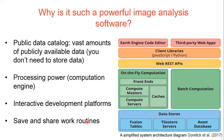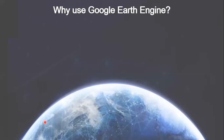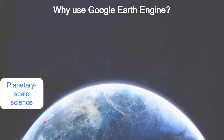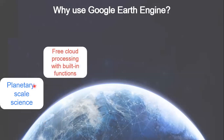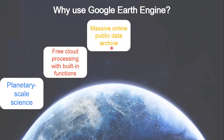With Google Earth Engine, you can simply share your work with a single click. Why should we use Google Earth Engine when we already have traditional ArcGIS, QGIS, or other software? First, it is planetary scale science — it focuses on the whole planet, not just one area. Second, it is freely available with cloud processing and built-in functions. Third, it is a massive online public data archive — most datasets from US Space Agency, European Space Agency, JAXA, and other space agencies that are publicly available on USGS are freely available on the Google Earth Engine platform.